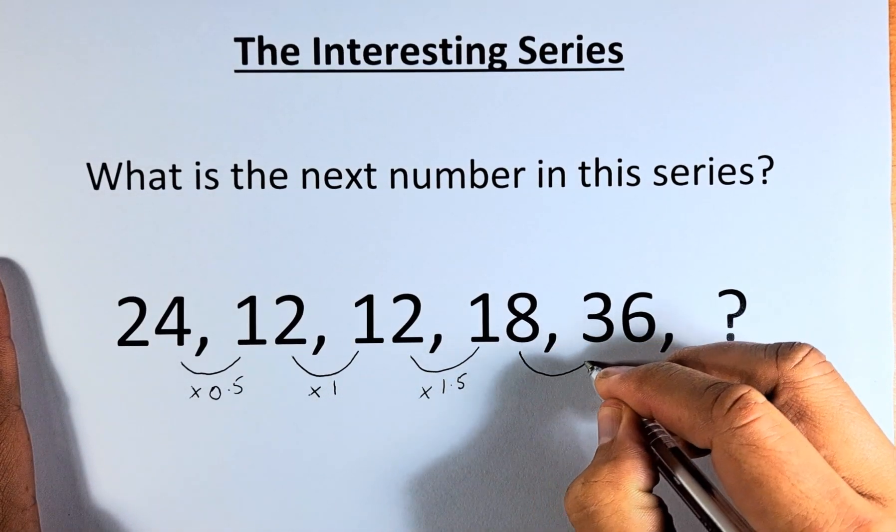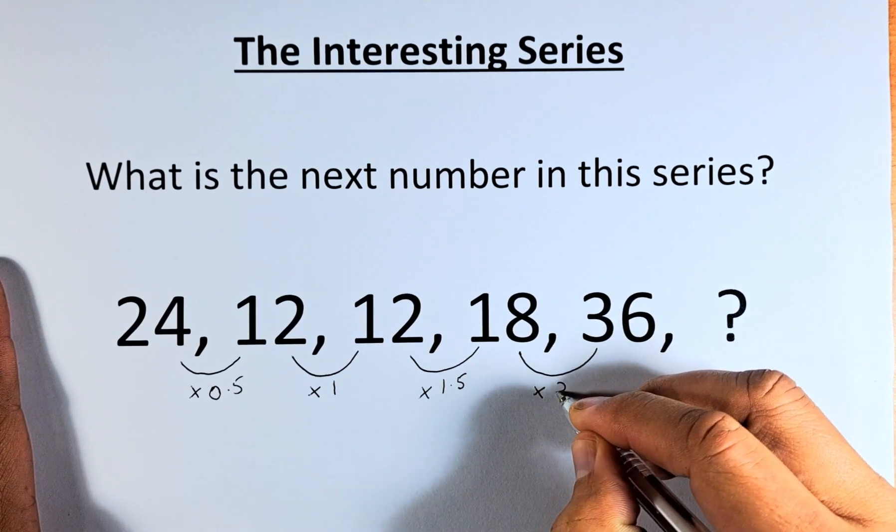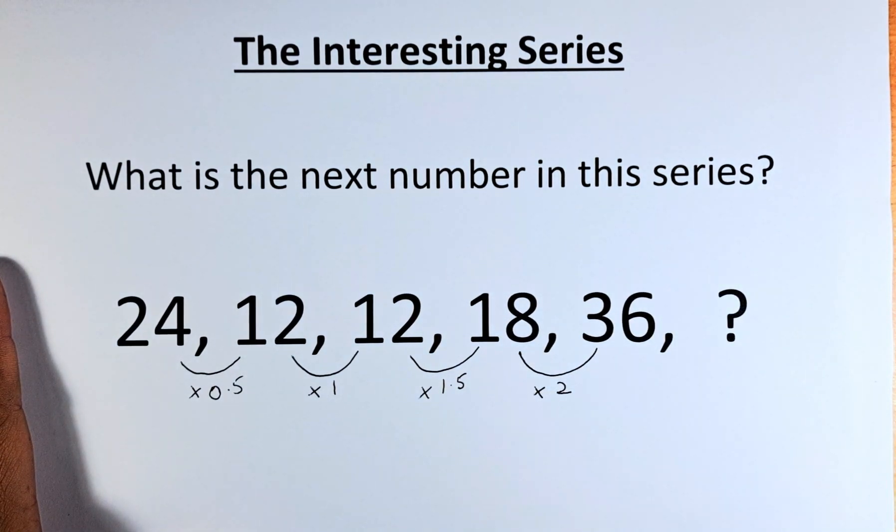And of course, the next number, from 18 to 36, we're going to multiply by 2. 18 times 2 will give us 36.